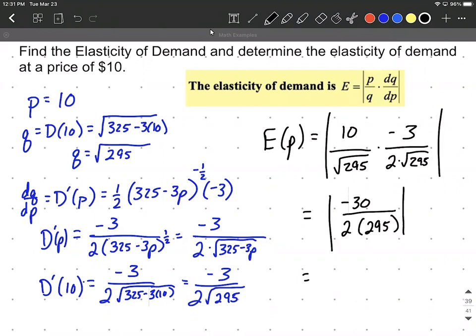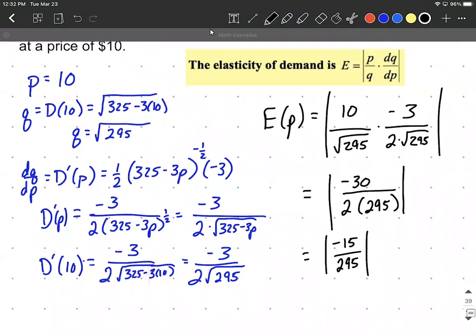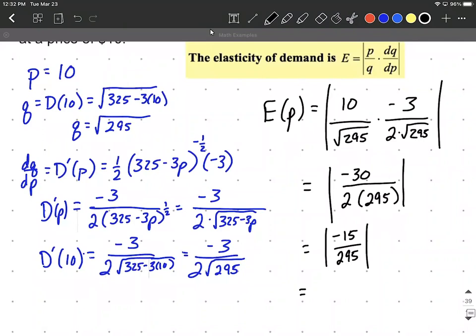We could reduce this down a little bit more and say maybe negative 30 divided by two is negative 15. We are eventually going to get this into our calculators to evaluate it. The result is going to turn out being positive because it's an absolute value. And this one works out to be 0.050847 dot dot dot, so it keeps going.